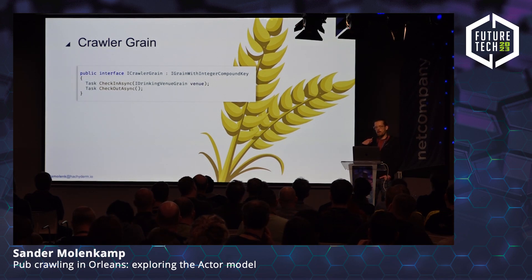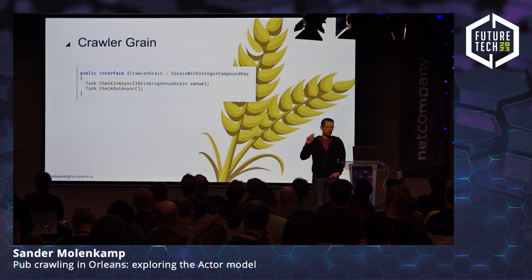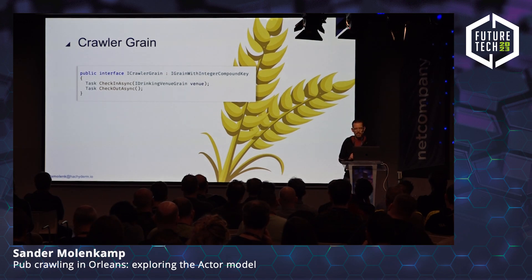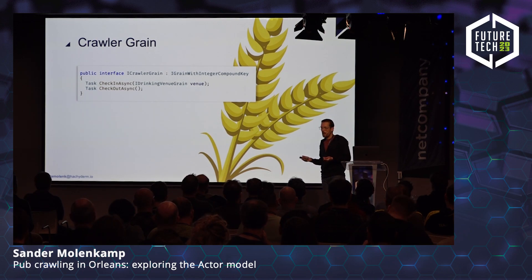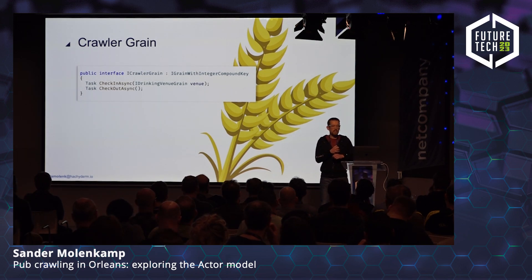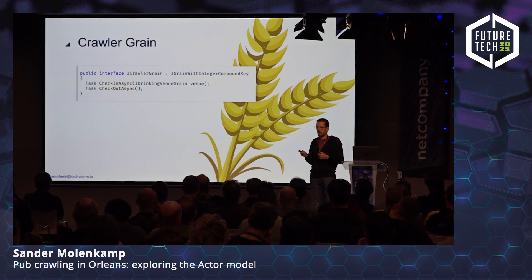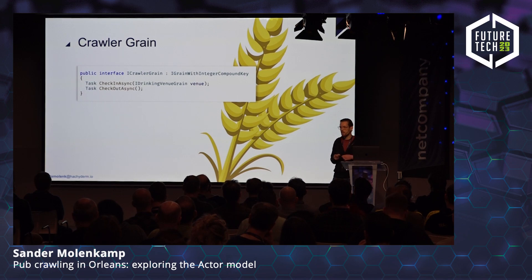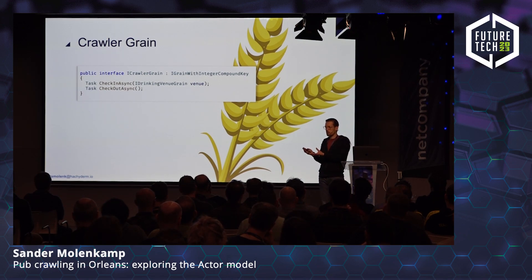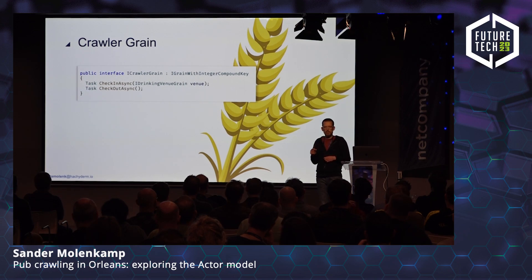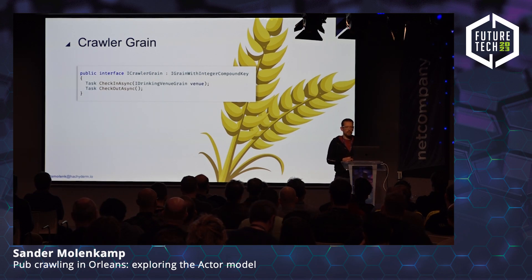Here's an interface I wrote for the crawler grain. Each grain needs to have an interface, and you can see I inherit from the nicely named IGrainWithIntegerCompoundKey interface. Every grain needs an identity called a key in Orleans. The key can be of different types: a GUID key, an integer key, a string key, or a combination like a GUID with a string or an integer with a string. I'm using the latter — the crawler grain represents a participant in a specific event, so the key is a combination of the event ID (integer) and the crawler ID (string), which contains the login name of the user.